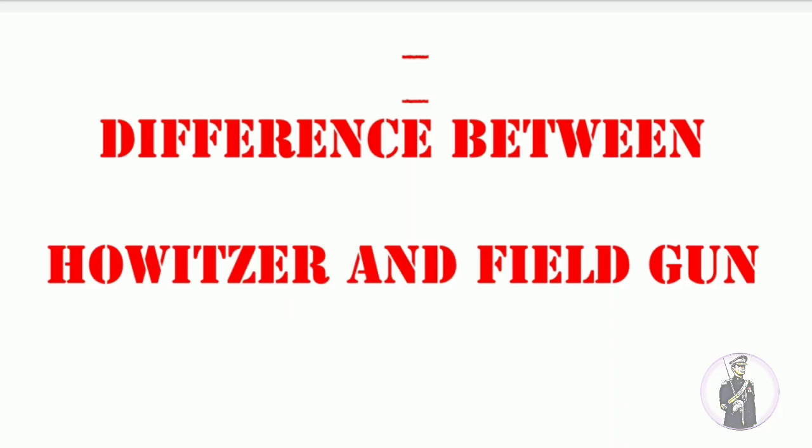The howitzer and the field guns are the types of guns used by the artillery regiment. There are subsections under the artillery regiment which use different types of guns based on their operational role. Most people get confused by the words howitzer and field gun, as these guns look similar, leading to confusion about what is actually a howitzer and what is a field gun.